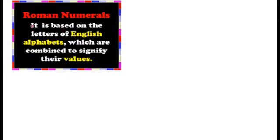V equals 5, L equals 50, and D equals 500 — these three alphabets are never repeated, meaning we can write them only once. We also can never subtract these alphabets from other alphabets. For example, we cannot write DM because D is never subtracted. So V, L, and D are never subtracted.